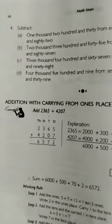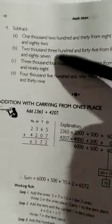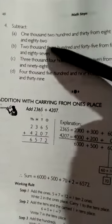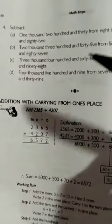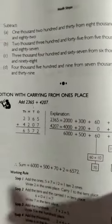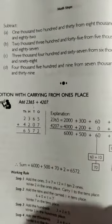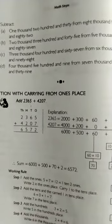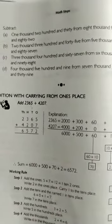Question number four is also subtraction: subtract one thousand two hundred and thirty from eight thousand five hundred and eighty-two. Students, firstly we will convert these words into numbers and after that we will subtract.